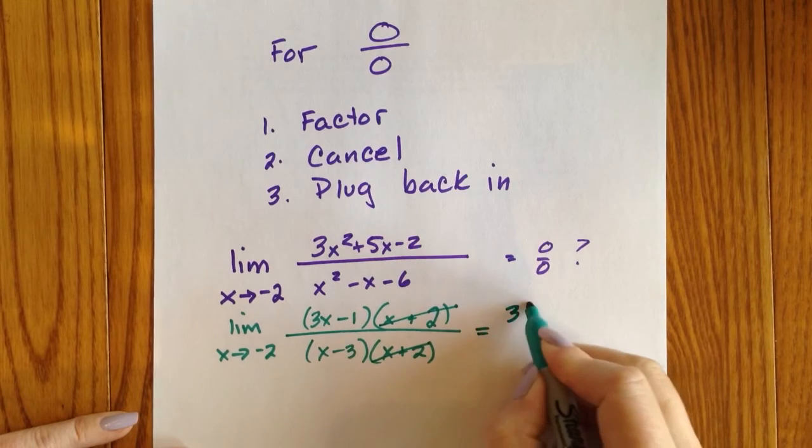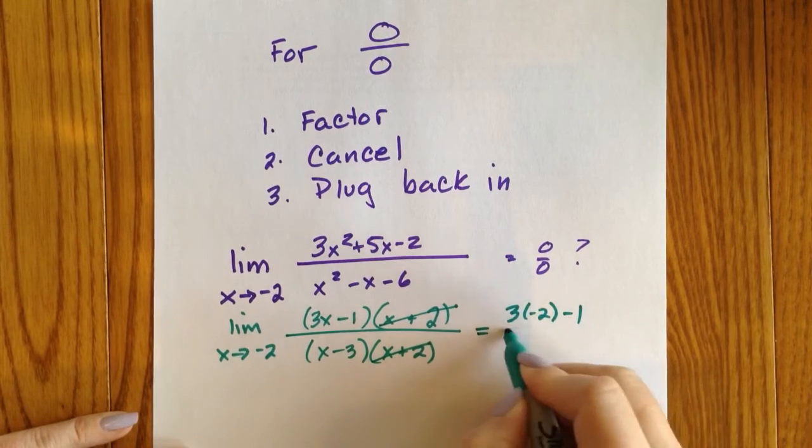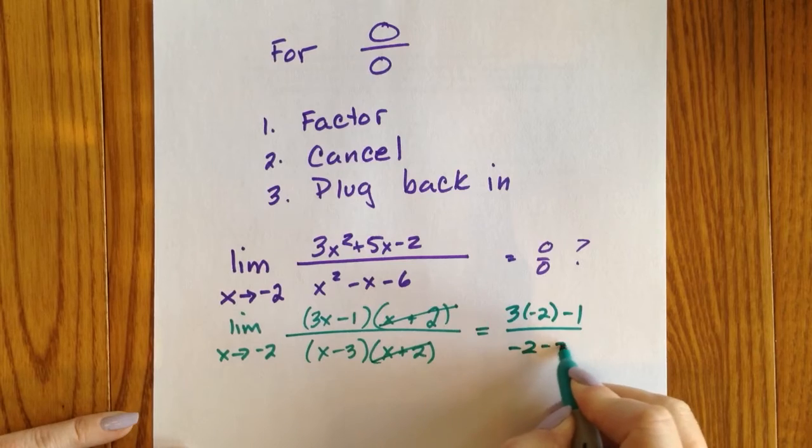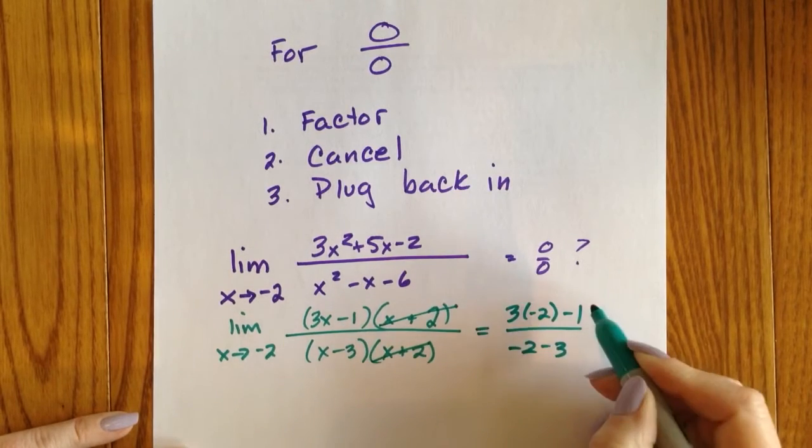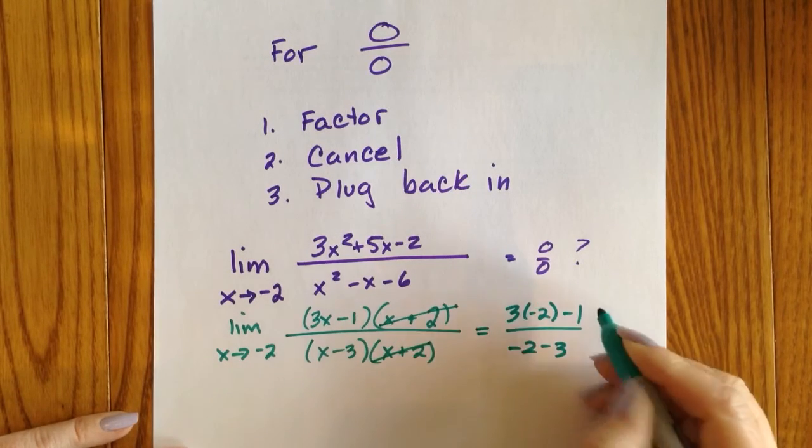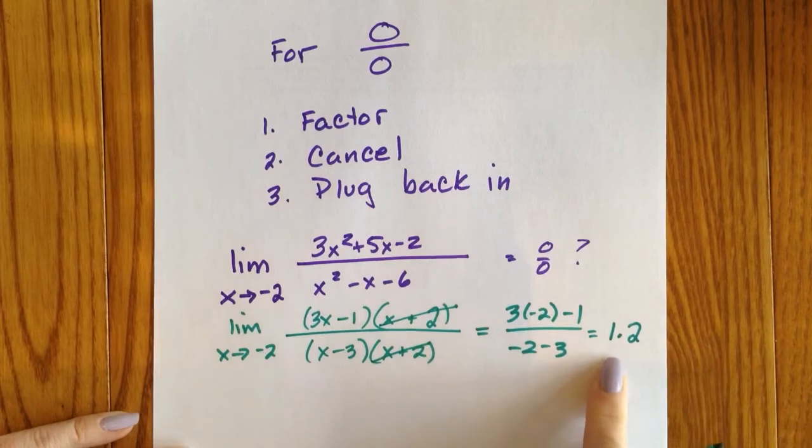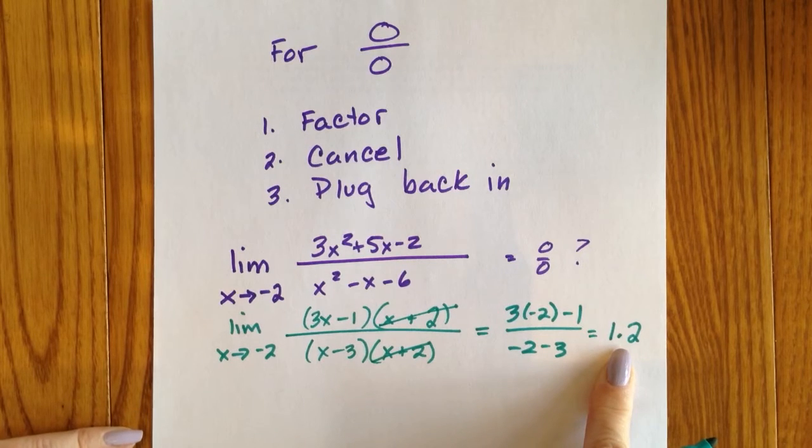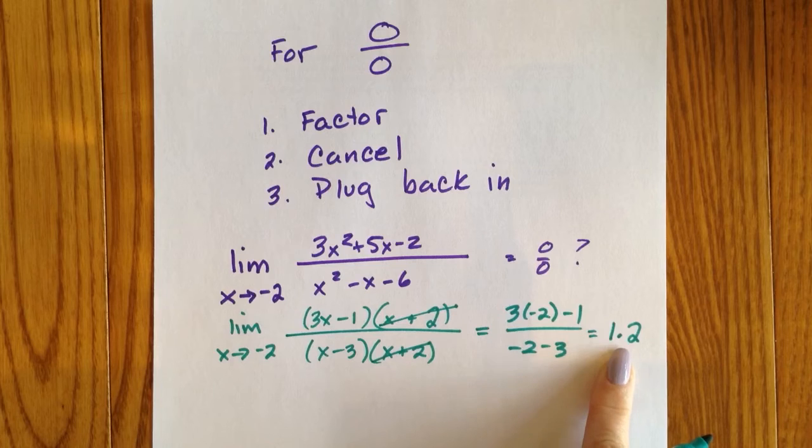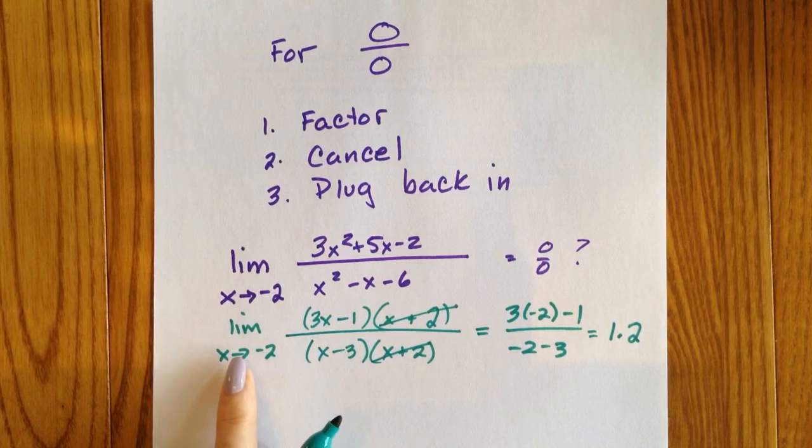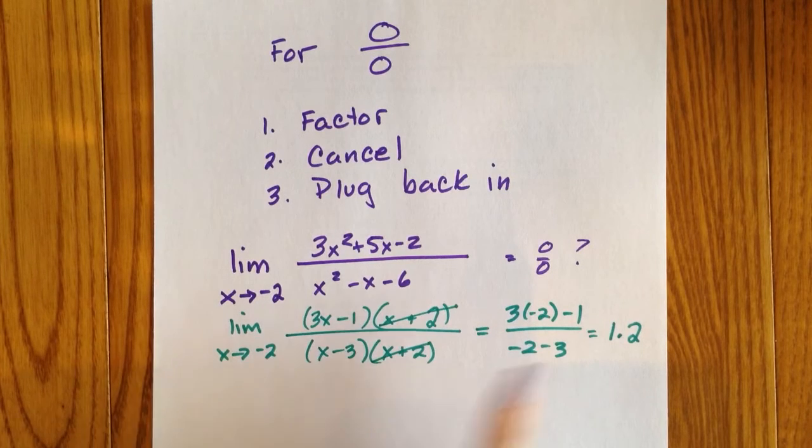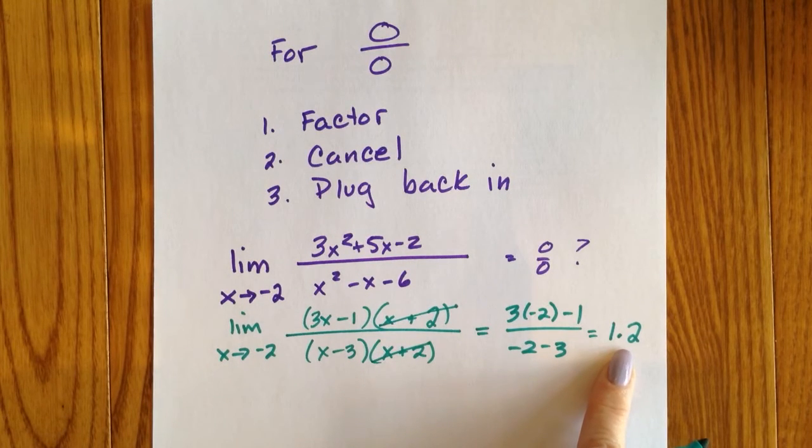When we plug negative two back in, I got negative seven over negative five, which turns out to be 1.2. 1.2, a real number. This needs to mean something. Notice it is no longer zero in the denominator for the limit. We got 1.2.